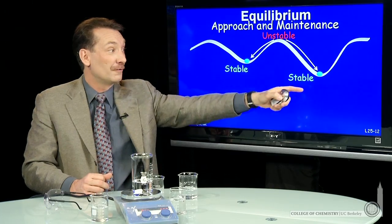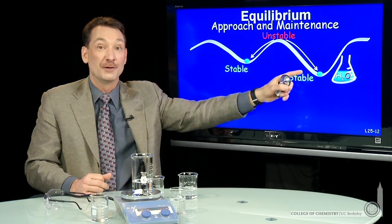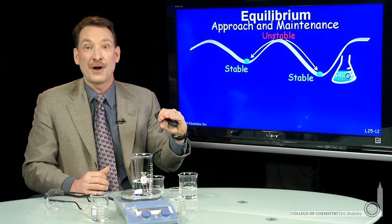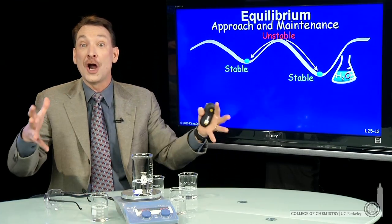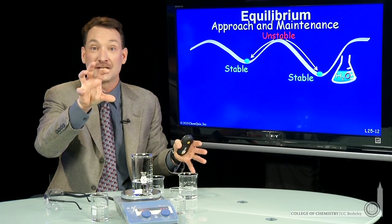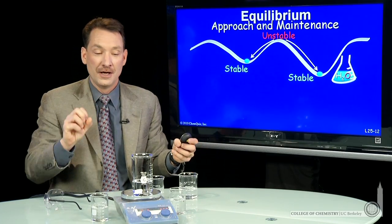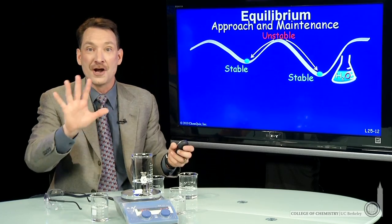So when you get a spark, you'll form water, the liquid. And that is the stable equilibrium favoring the products. So this equilibrium constant, K, would be large. It would favor the products. K large means products in the numerator are large, reactants in the denominator small, giving you a large K. So large K means the reaction goes well towards products.